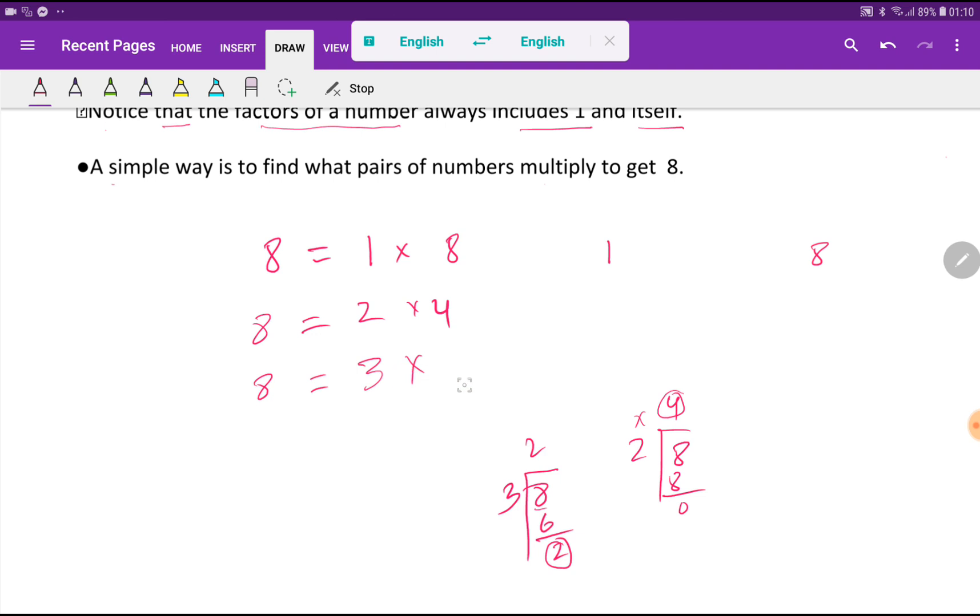Now the question is, should you stop here? Look at here. You shouldn't stop here. You should stop here. Because look at here. 3 squared equal to 9. This 9 is greater than 8. If you get such number which is less than 8, then you should continue. But 9, which is greater than 8, so you should stop here.